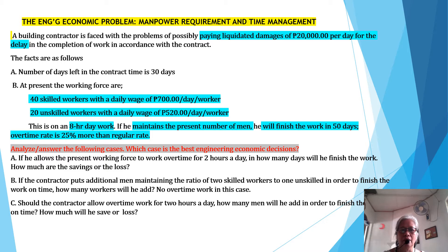with a daily wage of $520 per day per worker. This is an eight-hour day work. If he maintains the present number of men, he will finish the work in 50 days. The overtime rate is 25% more than the regular rate. Analyze the following cases.